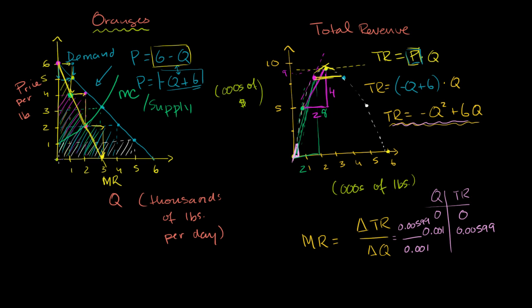If you want the market to produce one extra pound, the minimum price you would have to offer is the marginal cost. Now, you would definitely want to start producing because the marginal revenue you're getting is way above your marginal cost. Each incremental pound produced right here, you're getting much more revenue — maybe $5 or $6 — and it's only costing you a little over a dollar. So you keep producing, and that remains true all the way until you get to 2,000 pounds.